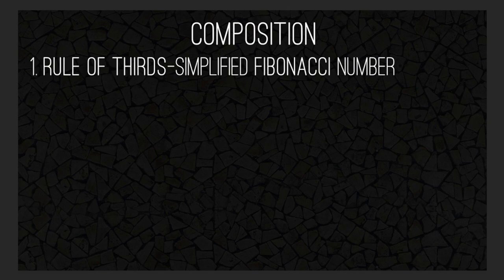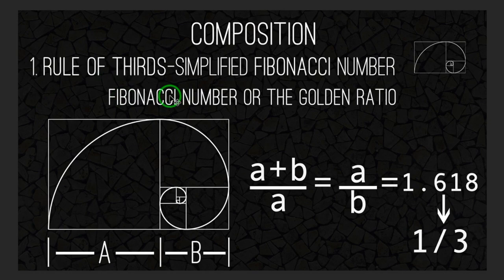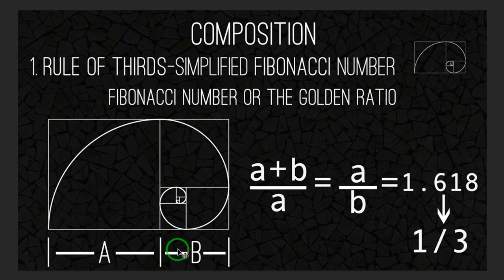So what is rule of thirds? Rule of thirds is basically Fibonacci's number or the golden ratio. Mathematicians were looking for a way to mathematically identify beauty in nature or in the world. This is the mathematical equation they came up with. There are a lot of people out there that do not understand this equation, and that's perfectly fine.